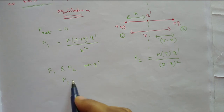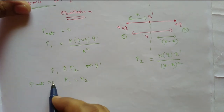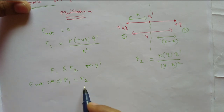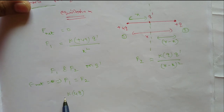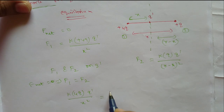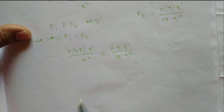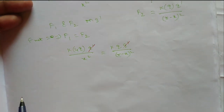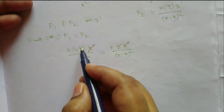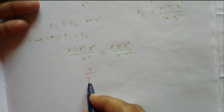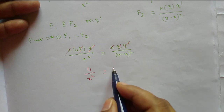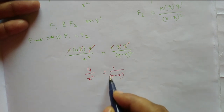F net equals zero implies F1 equals F2. Equating the two forces: k times 4q times q dash divided by x squared equals k times q times q dash divided by (r minus x) squared. Here, q dash cancels on both sides, q also cancels on both sides, and k cancels on both sides. The remaining equation is 4 divided by x squared equals 1 divided by (r minus x) squared.